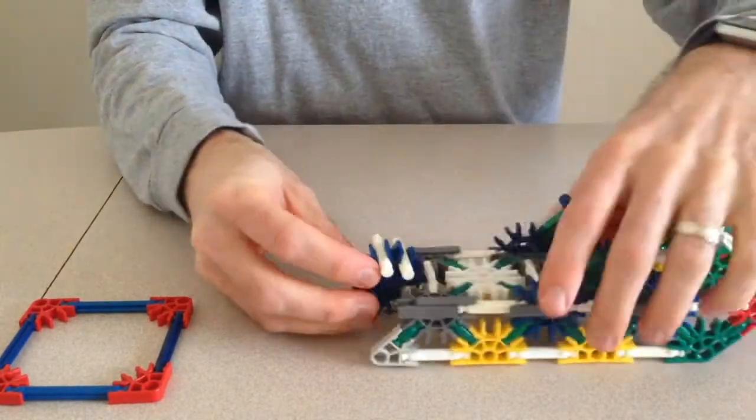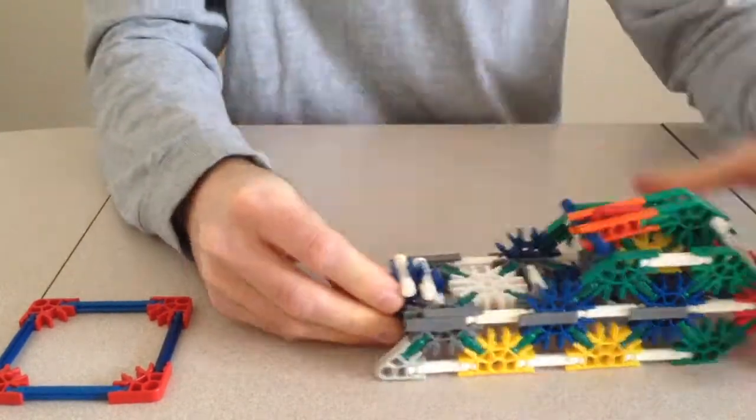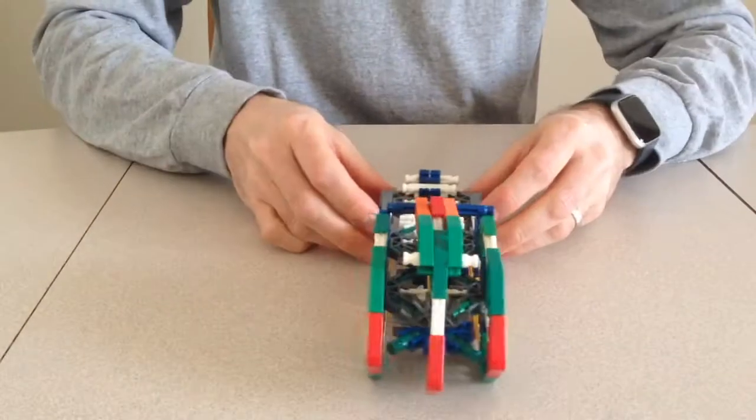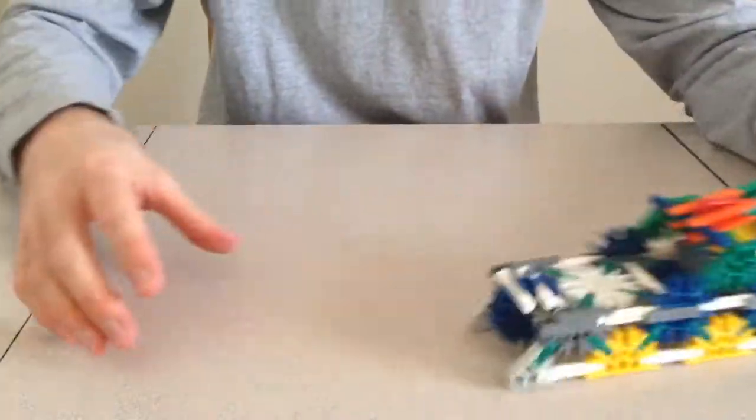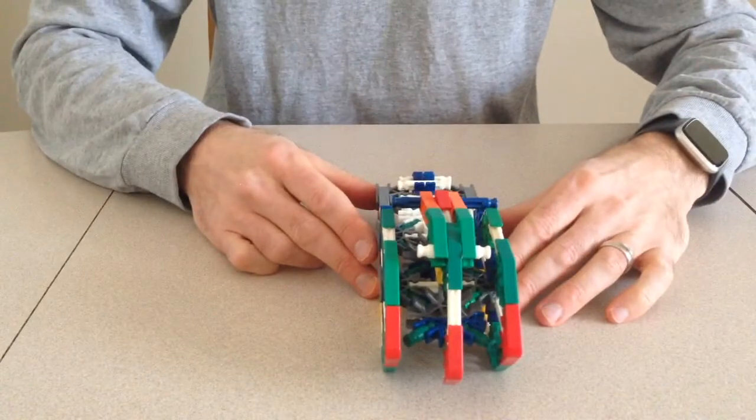There you have it. A simple jet ski made of K'nex pieces. I hope you enjoyed building and playing with it. Be sure to like the video and subscribe to see how to build more fun models. Thanks for watching.